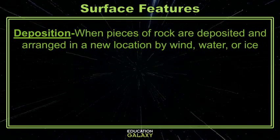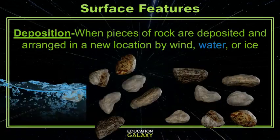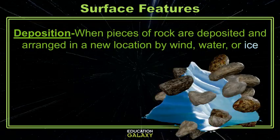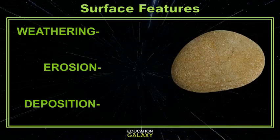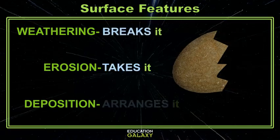Deposition is the final step where all of this rock, dirt, and earth is deposited and arranged in some place new. The wind can carry dirt to new places. Water, rivers, and the ocean can deposit dirt onto new shores, banks, and beds. Ice glaciers deposit the dirt, earth, and rocks in new places as they move and also push it aside from the glacier's path. An easy way to remember is that weathering breaks it, erosion takes it, and deposition arranges it.